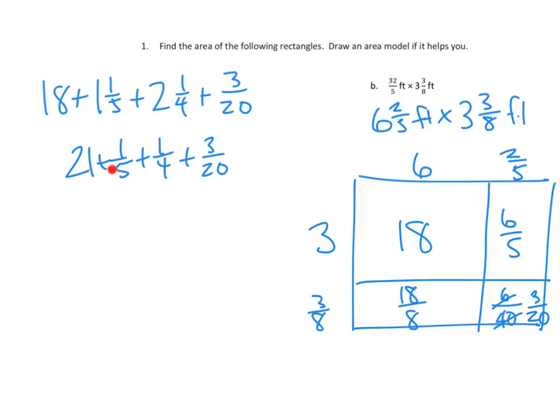Okay, now I have unlike units, and I need like units for my fractions here. Could I make 5ths into 20ths? I could, right? If I multiplied 1 fifth times 4 over 4, I could make 5ths into 20ths. Can I make my 4ths into 20ths? Yes, I could multiply my 4ths times 5 over 5, and that would give me 20ths as well. So I've got 21 wholes plus 1 times 4 over 5 times 4 plus 1 times 5 over 4 times 5 plus 3 20ths.